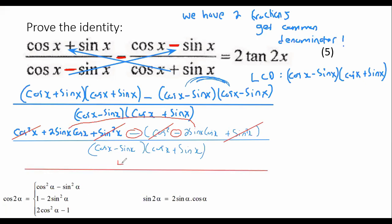And so at the top, you're going to end up with 4 sin x cos x. And then at the bottom, I'm going to multiply the two brackets together. And that's going to give you cos squared x minus sin squared x.